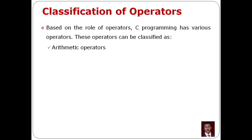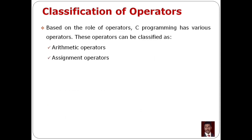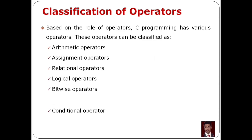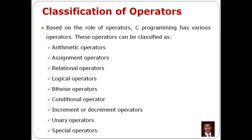Based on the role of operators, they are classified as follows: arithmetic operators, assignment operators, relational operators, logical operators, bitwise operators, conditional operators, increment or decrement operators, unary operators, and special operators. These are all the major classifications of operators in C programming.